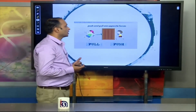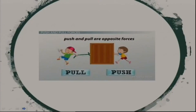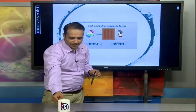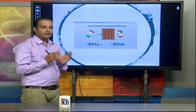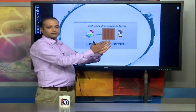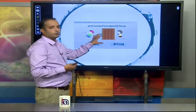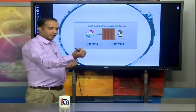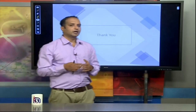Push and pull are opposite forces. Push is a force applied in the forward direction, and pull is in the backward direction. When we push an object, it moves away from the person applying the force. Pull moves the object towards the observer. Thank you.